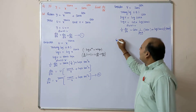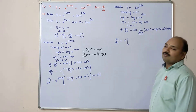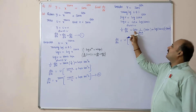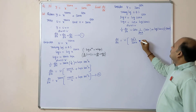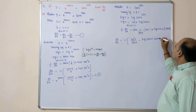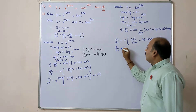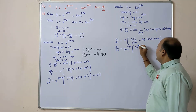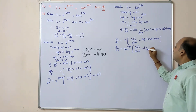So dv/dx = v · (cos x · cos x/sin x + log(sin x) · (−sin x)) = v · (cos²x/sin x − log(sin x) · sin x). Substituting v = sin(x)^(cos x): dv/dx = sin(x)^(cos x) · (cos²x/sin x − log(sin x) · sin x). Put this as equation number 3.